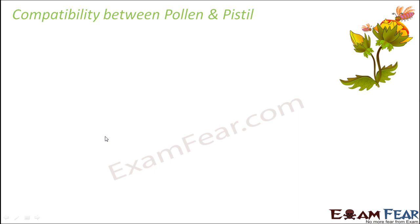What do we mean by compatibility? It is not that fertilization can take place just between any two plants — the pollen grains from any plant cannot just fertilize the egg of some other plant. There is a lot involved; for example, the genes of both plants might not be compatible with each other, so fertilization cannot take place. There has to be a compatibility check whether fertilization can happen between these male gametes and the female gamete or not.